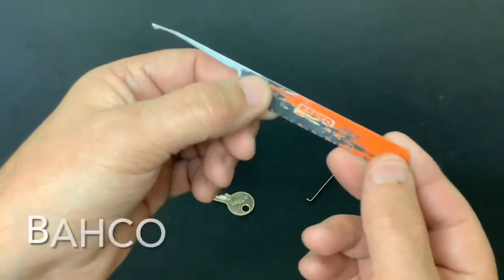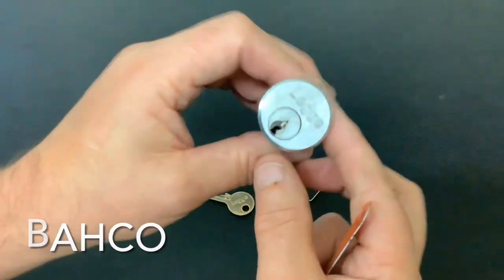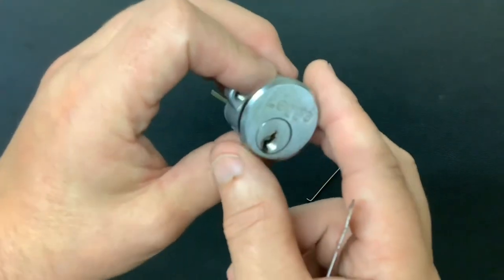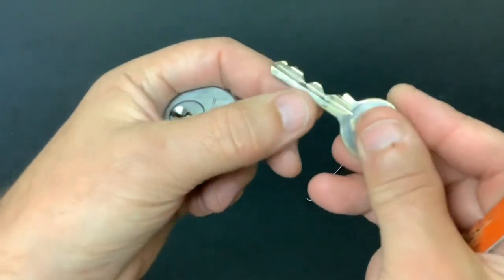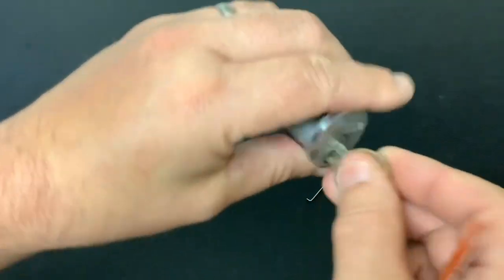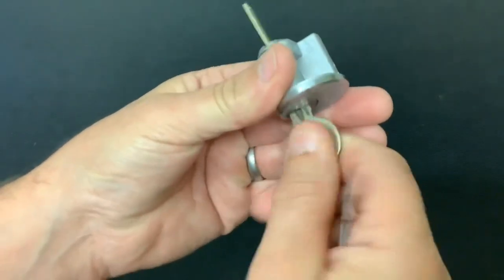Now we're going to see if we can pick open this Leggy rim cylinder with it. I have picked this one in the past and it's got great bitting on the key. Obviously with bitting like that, you know it's going to put up a fight.